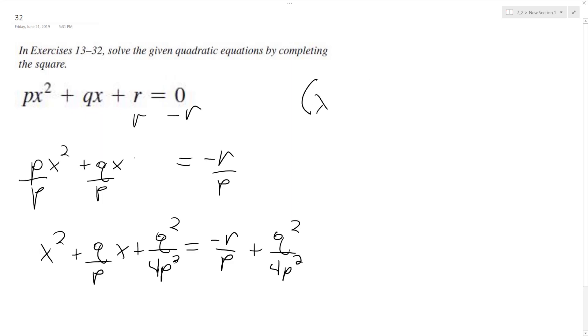So then we have x plus q over 2p squared is equal to negative 4rp plus q squared all over 4p squared.